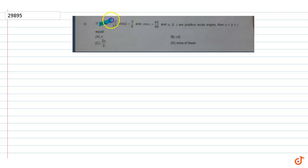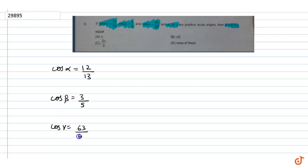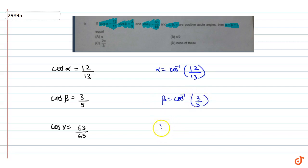The question given is: if cos α = 12/13, cos β = 3/5, and cos γ = 63/65, and α, β, γ are positive acute angles, then find the value of α + β + γ. So we are given cos α = 12/13, cos β = 3/5, and cos γ = 63/65, which means α = cos⁻¹(12/13), β = cos⁻¹(3/5), and γ = cos⁻¹(63/65).